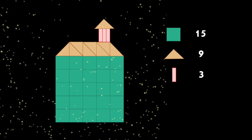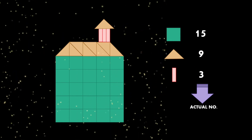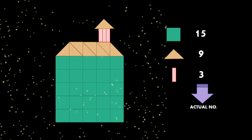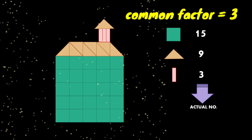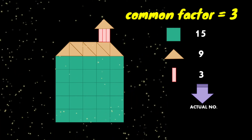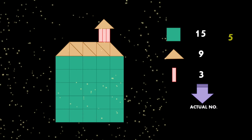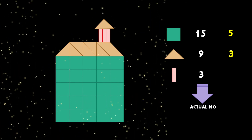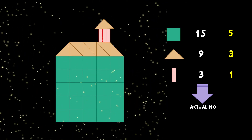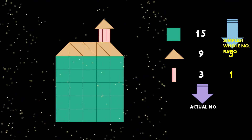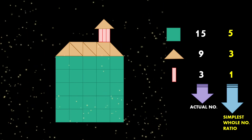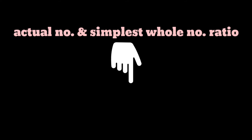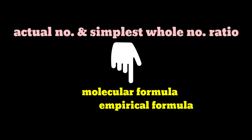These 15, 9, and 3 are the actual number of each shape making up the house. These three numbers also share a common factor of 3. So 15 divided by 3 gives 5, 9 divided by 3 gives 3, and 3 divided by 3 gives 1. This new set of numbers is the simplest whole number ratio of each shape. These concepts of actual number and simplest whole number ratio are used to derive two chemistry terms: molecular formula and empirical formula.